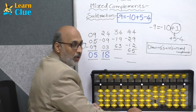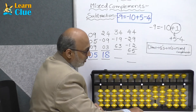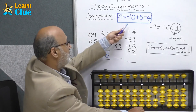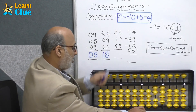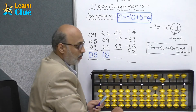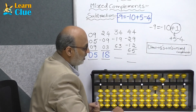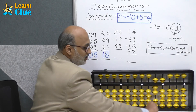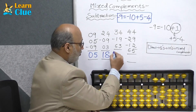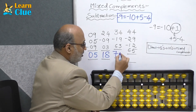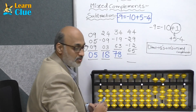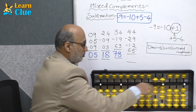Next problem: 34 minus 19 — minus 10 minus 9. Minus 9 is nothing but minus 10 plus 5 minus 4. Now they are asking plus 63: plus 60 plus 3. The answer is 78.